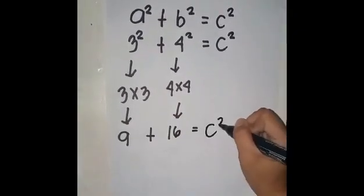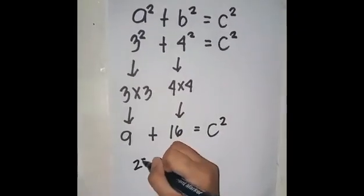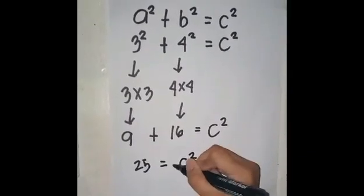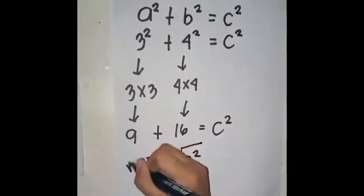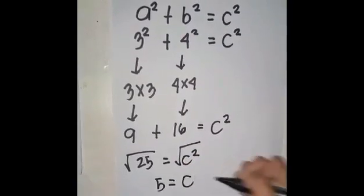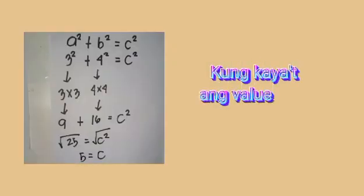So 9 plus 16 equals 25. Pagkatapos na ito magsama ay square root na nito. So square root of 25 equals c squared. Ang 25 ay perfect square ng 5 times 5. Kung kaya't ang value ng c ay 5.